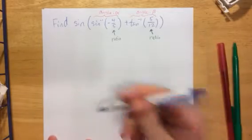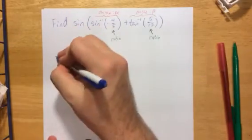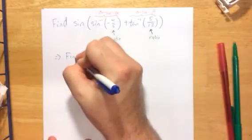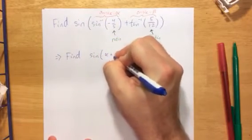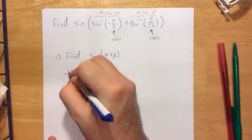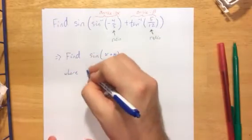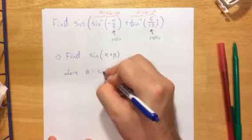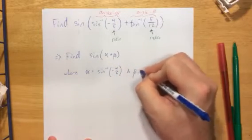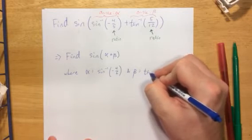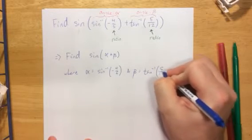So now we have changed the problem into the following. We are now asked to find the sine of alpha plus beta, where alpha is equal to the inverse sine of negative 4 fifths, and beta is equal to the inverse tangent of 5 twelfths.